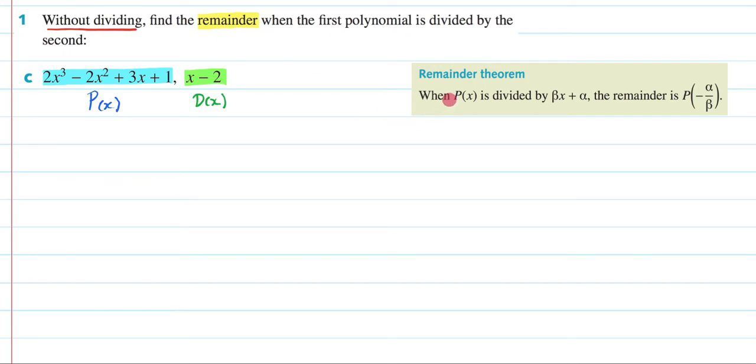So it's saying when P of x, so that's our dividend, is divided by this. Now that is my divisor. What is doing the dividing? So what we could say is that this right here is D of x. Finally, it says, so when my dividend is divided by my divisor, the remainder is going to be this. This is my remainder.